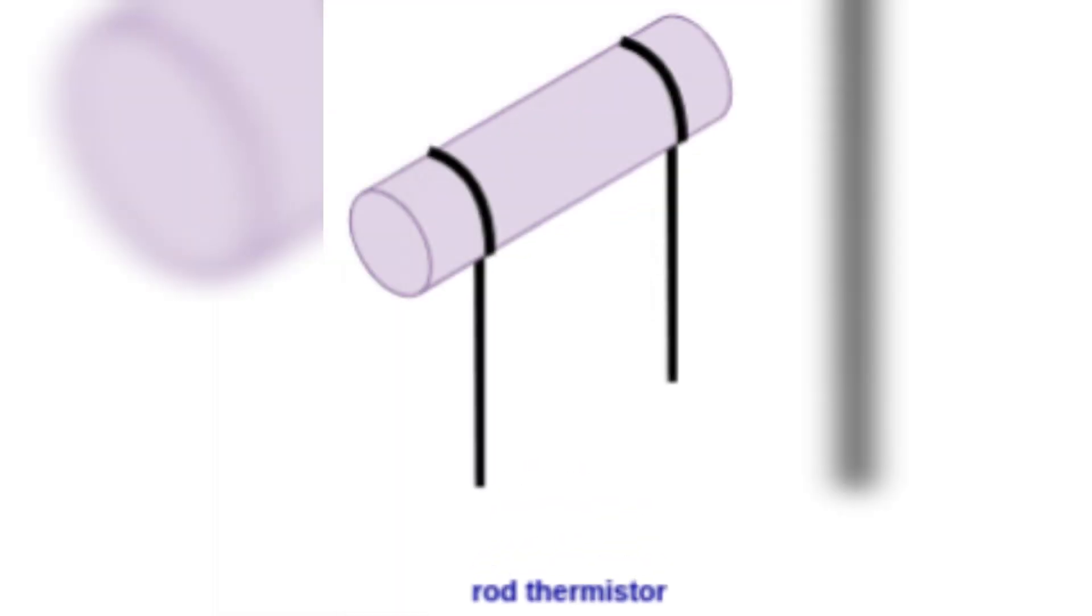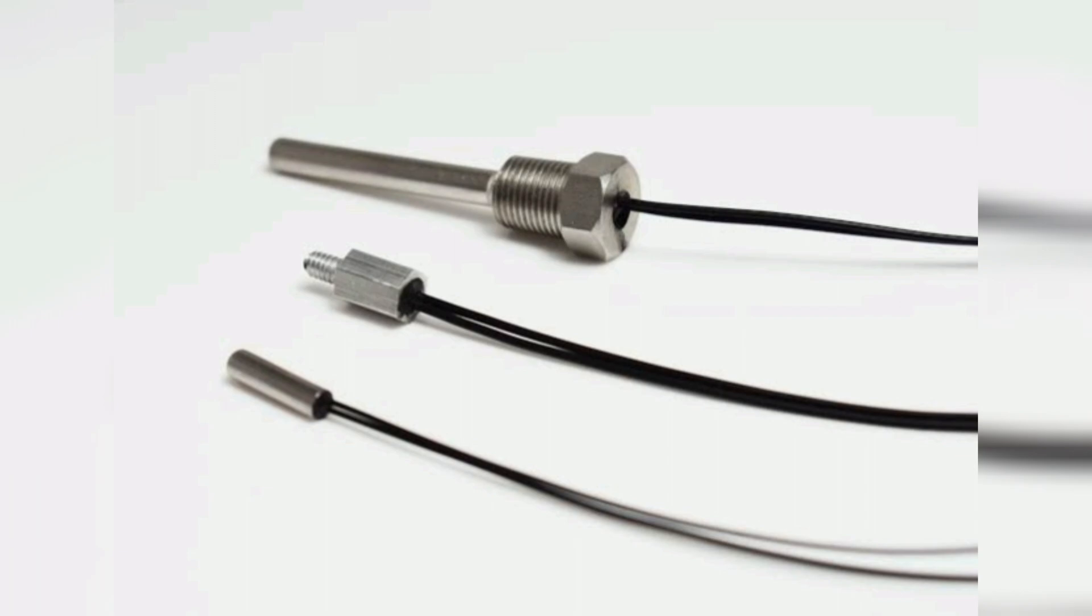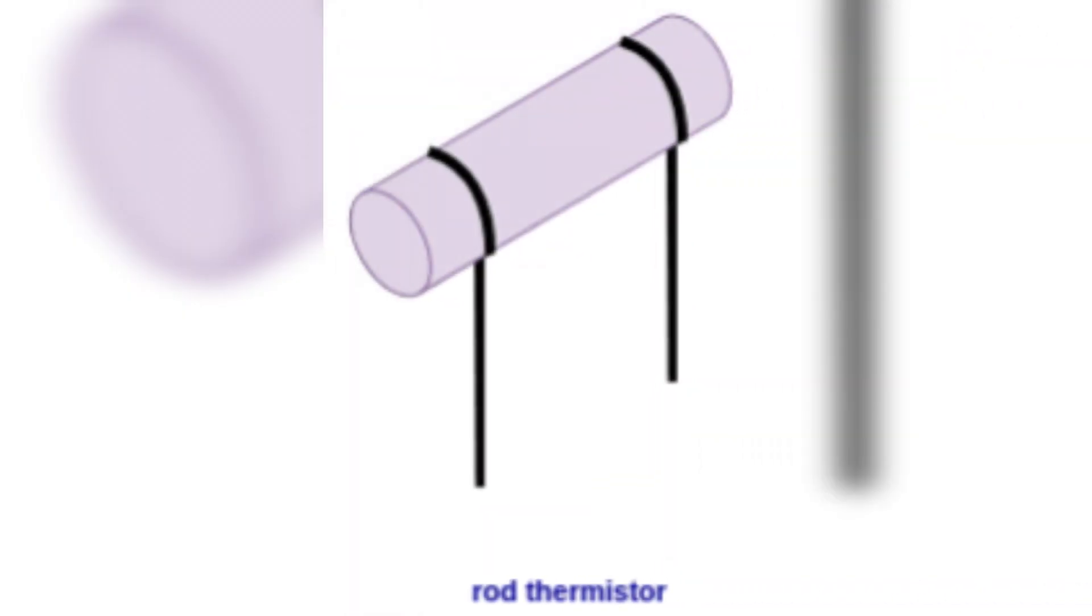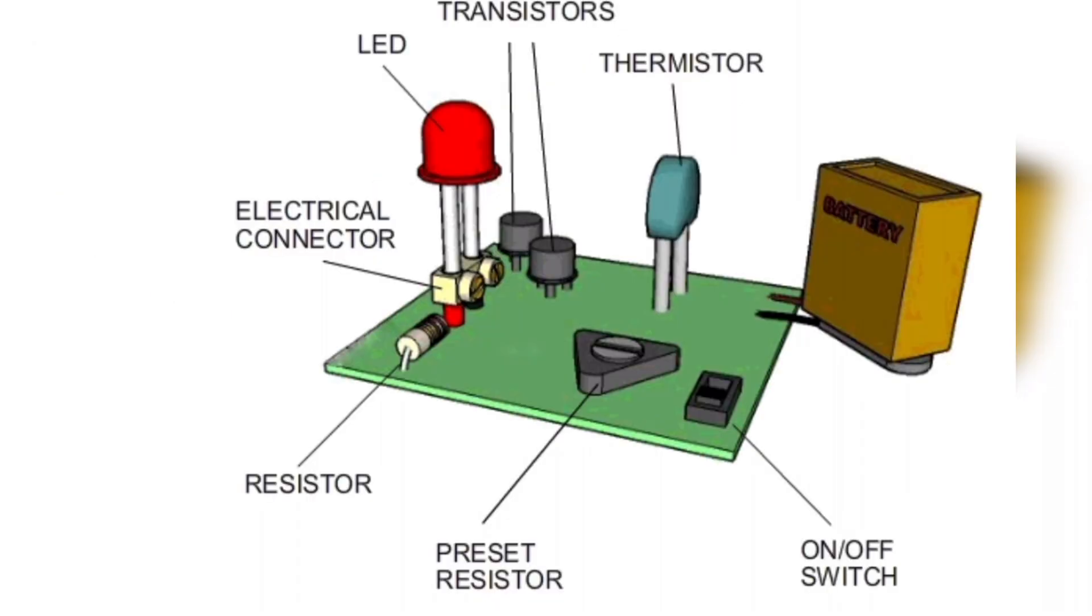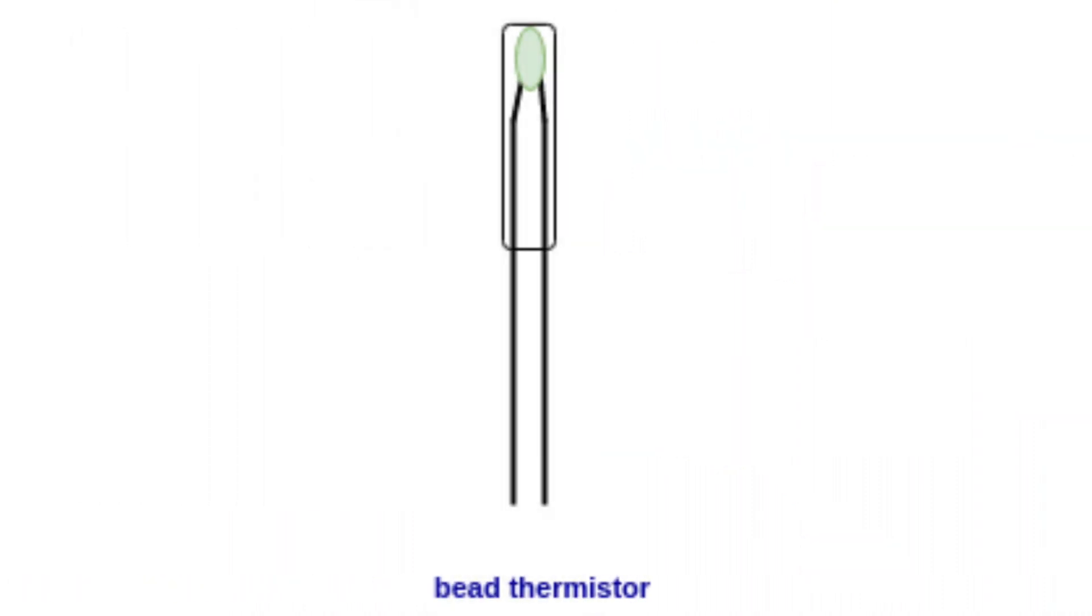The disc type thermistor and rod type thermistor is used when greater power dissipation is required. The rod type thermistor has high power handling capacity. The smallest thermistor in this configuration is the bead type thermistor.